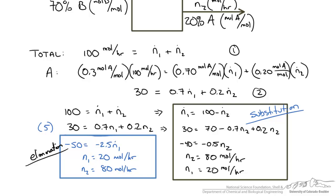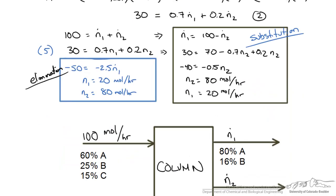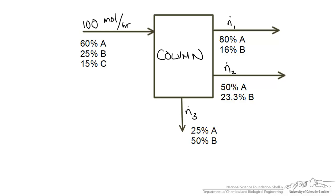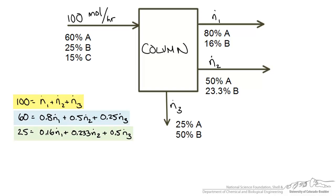So let's take this just a notch more complicated and look at a process where we have three components. I am going to take the same procedure I did before and write out the material balances for an overall balance, an A balance and a B balance.